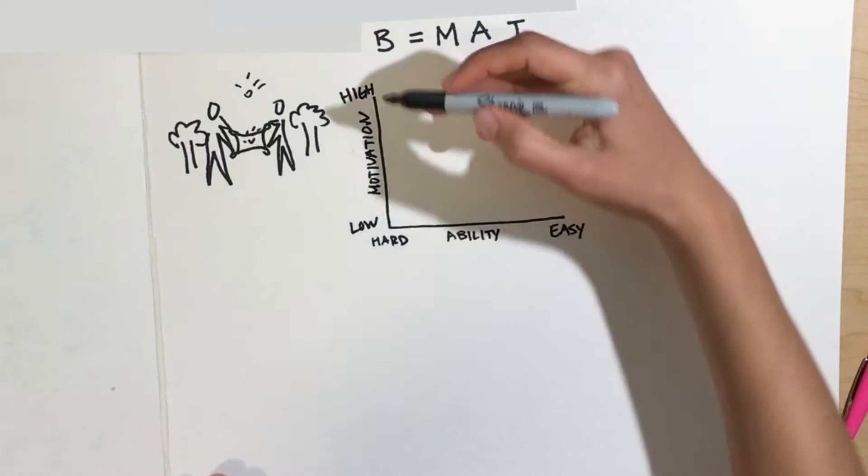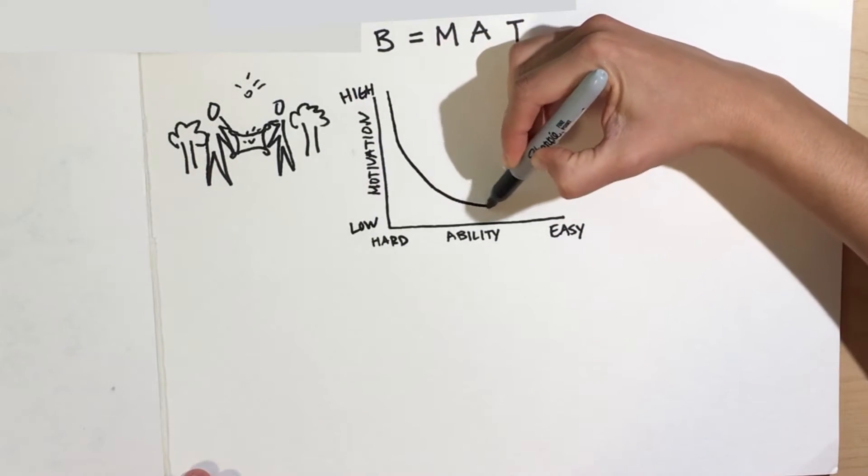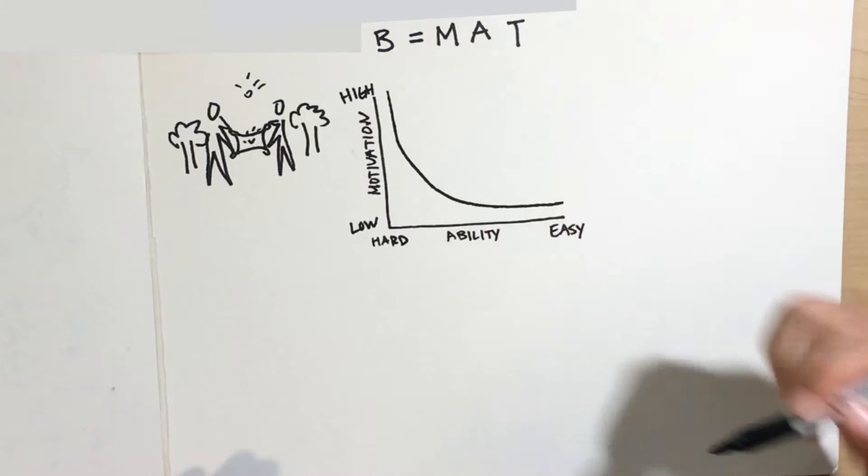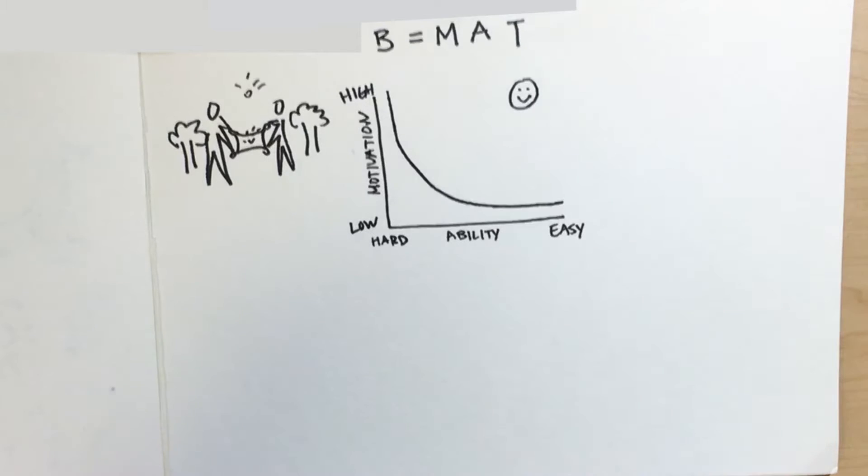There is a trade-off between motivation and ability. If somebody is highly motivated to do a behavior that is very easy for them to do, they will perform the behavior when triggered.